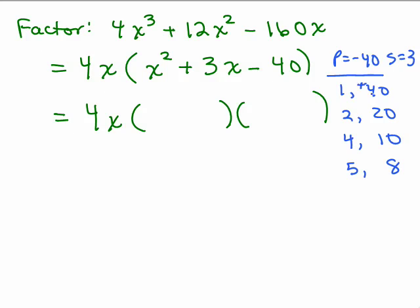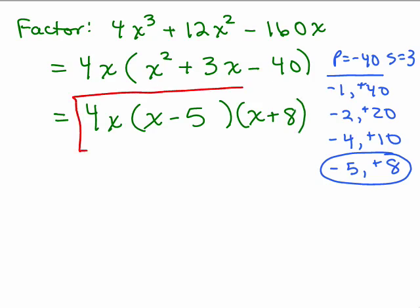Now we have to determine the signs. Since the sum is positive 3, the positive number goes in front of the bigger number. Since the product is negative, the other number has to be the opposite sign. We're looking for a combination that has a product of negative 40 and adds up to 3, which is 8 and negative 5. So our final answer is 4x times x minus 5 times x plus 8. If you were to multiply that out as a check, you should get right back to 4x cubed plus 12x squared minus 160x.